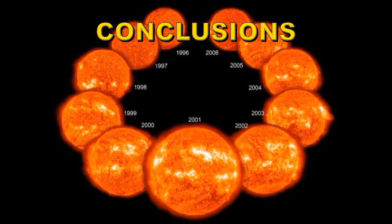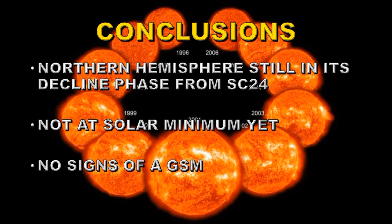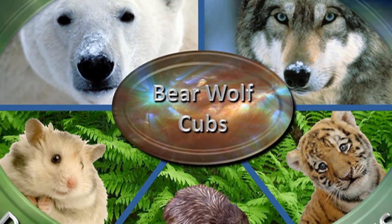So let's draw some conclusions. The Northern Hemisphere of the Sun is still in its decline phase from solar cycle 24, whereas the Southern Hemisphere is in its transition phase between the two cycles. We won't get the onset of solar cycle 25 until both hemispheres have passed through this transition phase, so we're not at solar minimum as yet. There are also no signs — looking at the total solar irradiance measurements — of a grand solar minimum being on its way anytime soon. So until next time, goodbye.